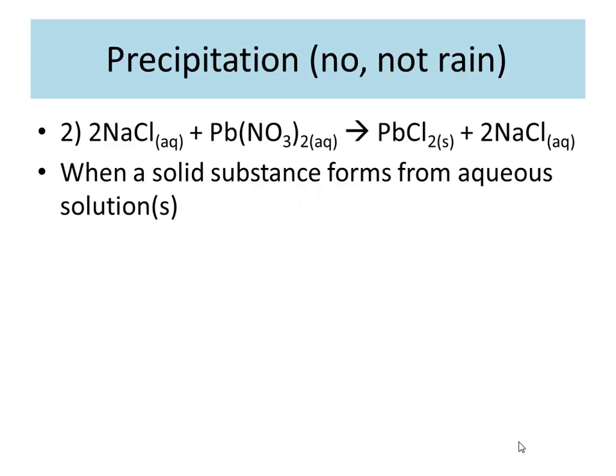Precipitation. Not the rain type of precipitation. In chemistry, we call precipitation when a solid substance forms from aqueous solutions. There can be a couple ways of precipitation. It can be one solution or mixing two solutions. We call that a precipitate if it forms a solid.